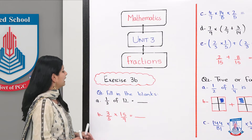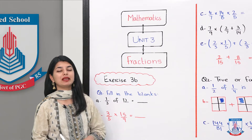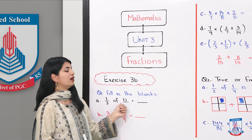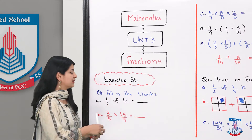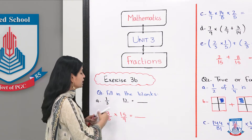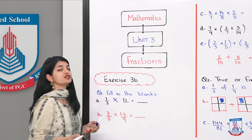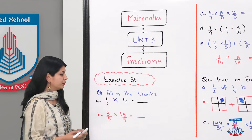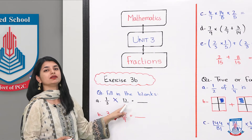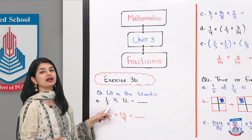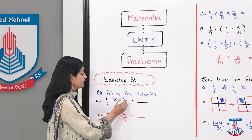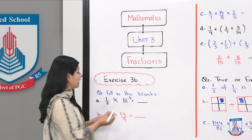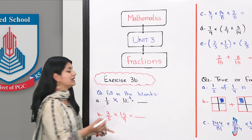Looking at our first question, which is fill in the blank. In the first part we have 1 over 3 of 12. 'Of' means multiply. So 1 into 12 is 12, and 12 divided by 3 — if we cancel out — gives us 4. So our answer is 4.